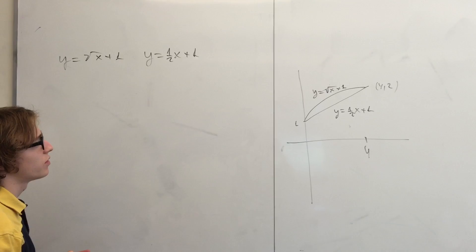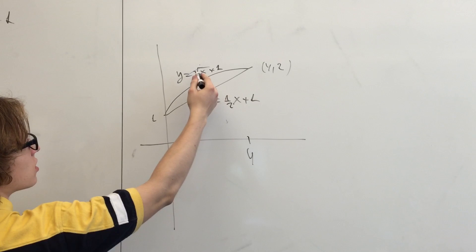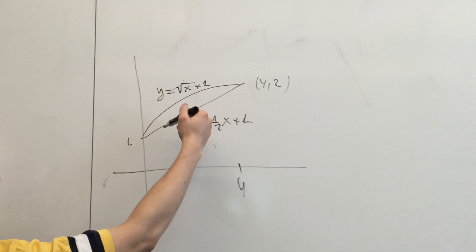And this graph, y = √x + 1, is the fish's speed relative to the water. And then this line, y = (1/2)x + 1, is the speed of the current.